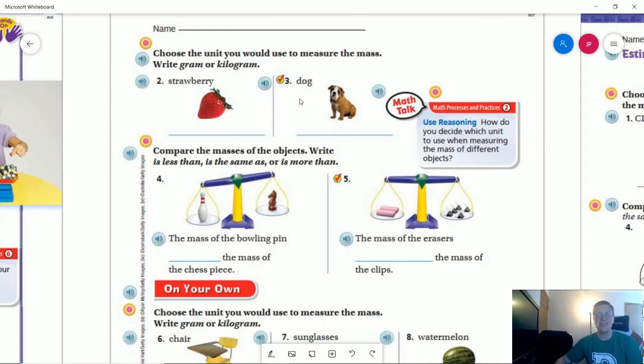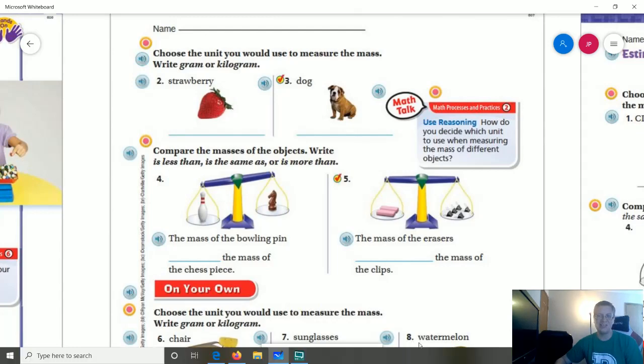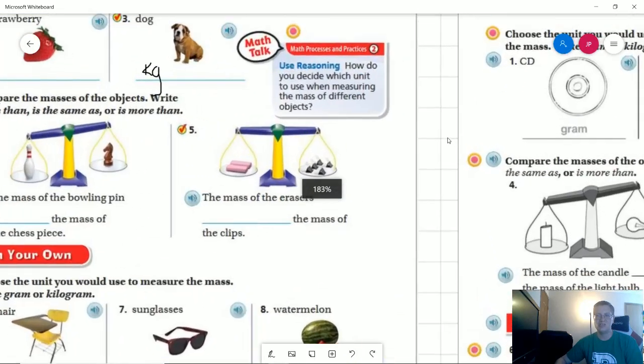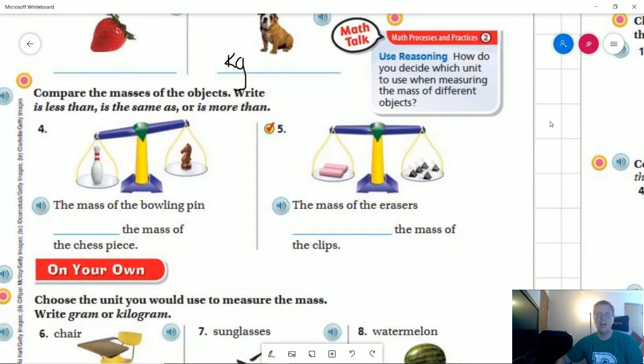So number three, the mass of a dog. Would we measure the mass of a dog in grams or kilograms? Is a dog similar in size to a single paperclip or a book or even larger than that? So the one that would make the most sense for that would in fact be kilogram and I'm just going to write the abbreviation and I'm going to try to zoom back in because this keeps taking me out.